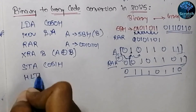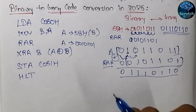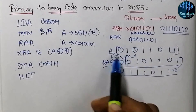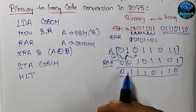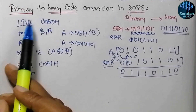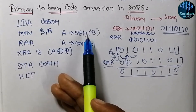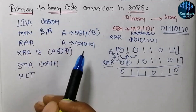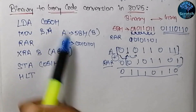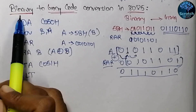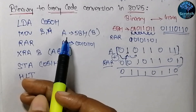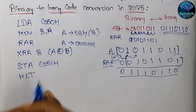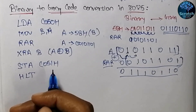We now have the result in the accumulator, so we will store that data at address C051 hex and then halt. I hope you got this program — it was simple: first rotation towards right, then the XOR operation. In the next videos we will see binary to grey code conversion for an array of elements, and grey code to binary code conversion. Make sure to watch the next videos. See you in the next video, thank you.